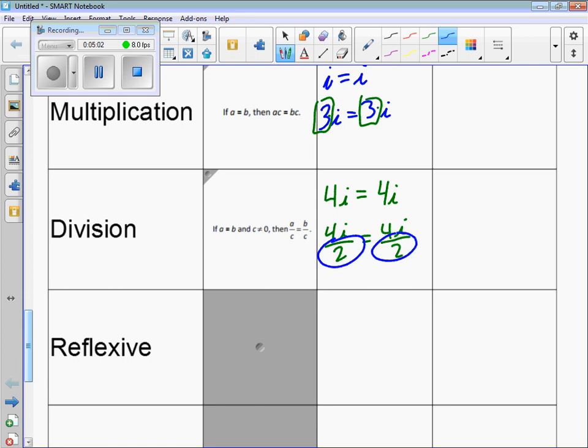Reflexive, my favorite property. It's a equals a. So any number, even with imaginaries, 10i equals 10i. So reflexive, my favorite property.